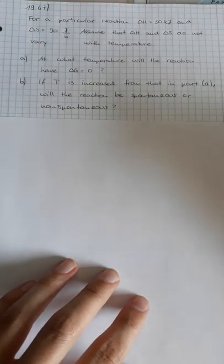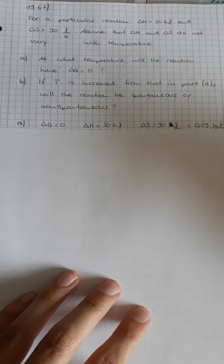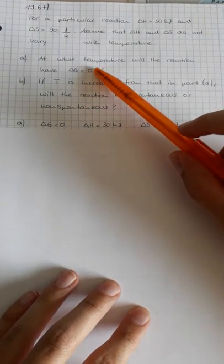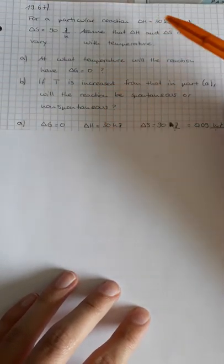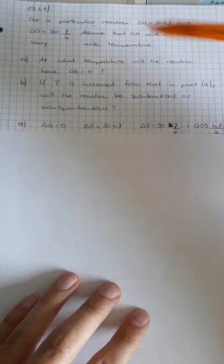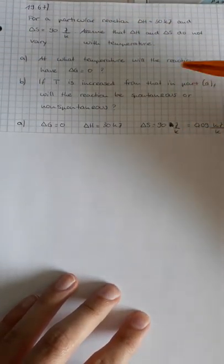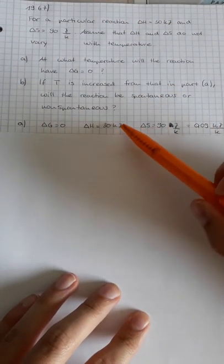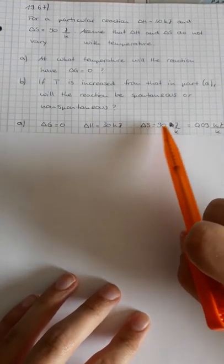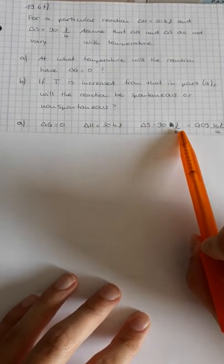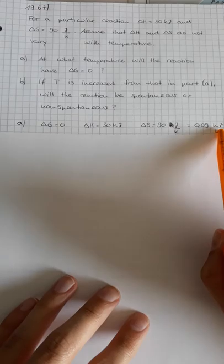At first we write down the aspects we already know. We know that delta G should be zero. We know 30 kilojoule and we know 90 joule per kelvin. But we see that the units are different. We got kilojoule and joule, so we have to bring joule into kilojoule with the factor of thousands.